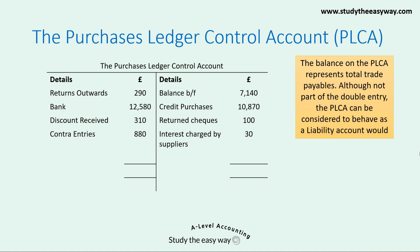On the debit side are items that reduce the liability, such as returns outwards — goods returned to a supplier. The bank figure shows the amounts paid to suppliers, and there's also discount received and contra entries. Contra entries are offset entries, with the other side of the double entry being shown in the sales ledger control account. If you're not familiar with these items, you might find it helpful to watch the control accounts video available to subscribers on our website.